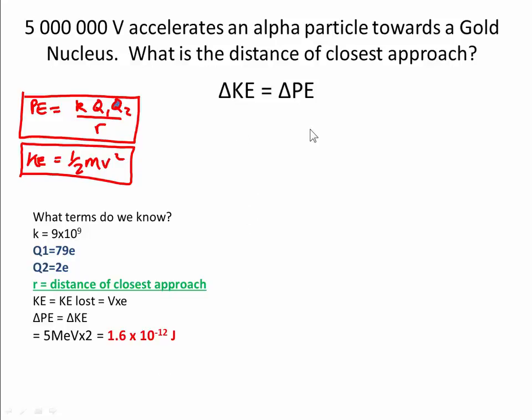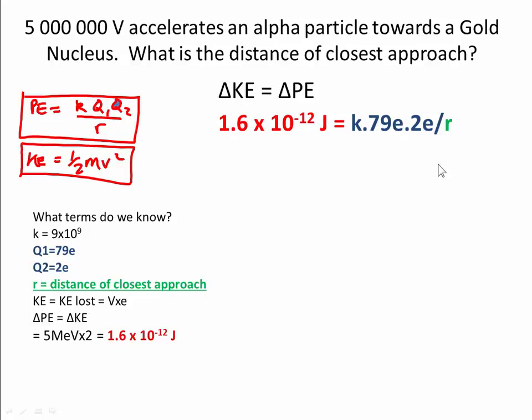Now the kinetic energy is converted into potential energy. This is the equation where this is 1.6 times 10 to the minus 12 joules. That's the energy that we have. This is KQ1Q2 divided by R. We rearrange to make R the subject.